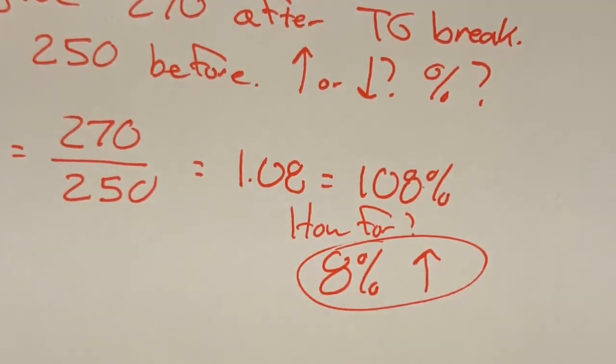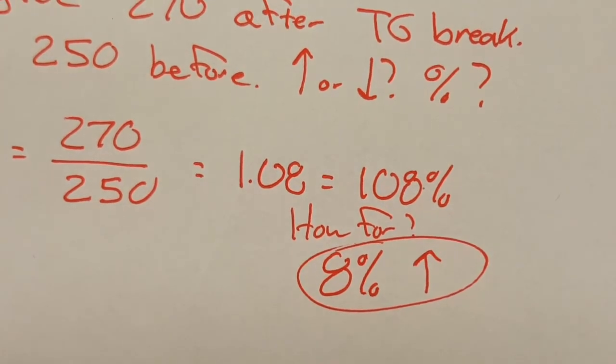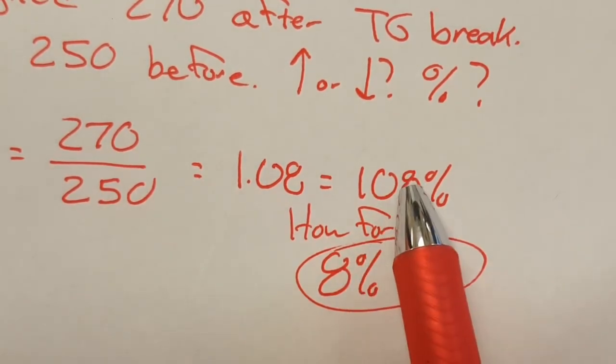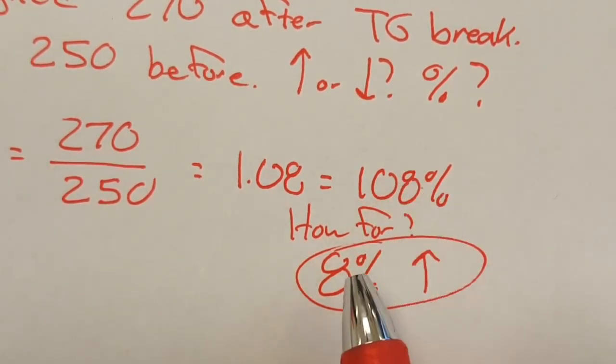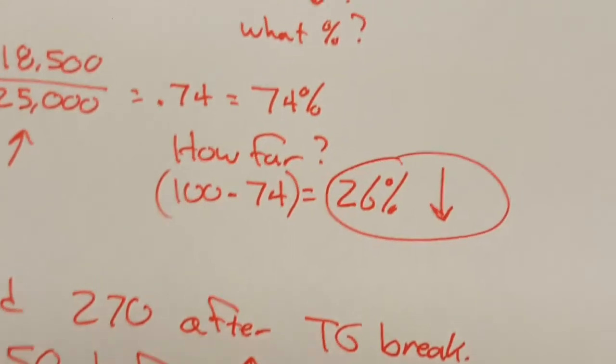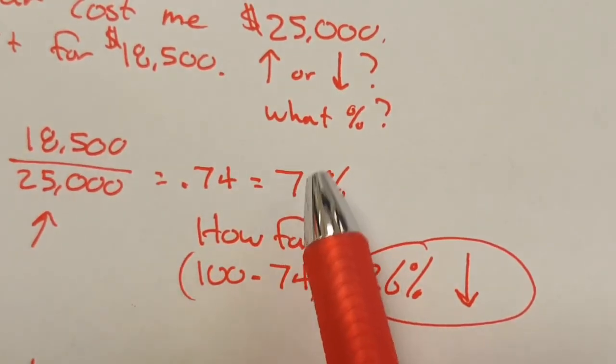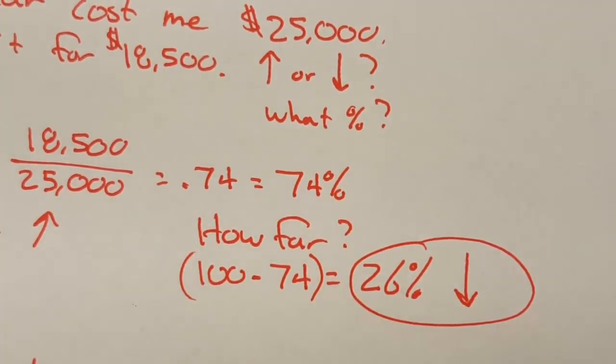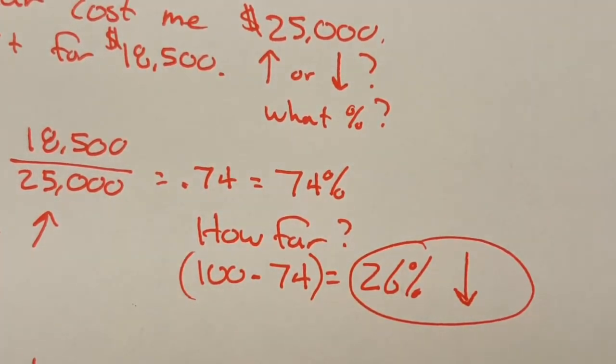So it's an increase of 8%. Increase and decrease, it's the same math, but you have to ask yourself, how far from 100% are you? If you're over 100%, that's gonna be your answer. 108%, oh 8% increase. If you're under 100%, how far under are you? Well, I'm 26% under 100. Hopefully that will make percent increase and percent decrease a little bit easier for you, okay.